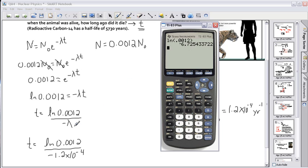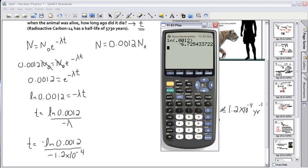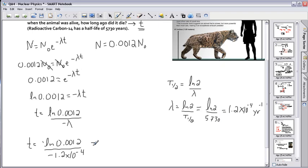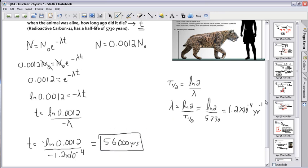ln of 0.0012 gives me this answer. Notice it's a negative, it's nice because this negative and the negative would cancel each other out. I take that answer, I divide it by negative 1.2 times 10 to the minus 4, and I get an answer of, with two significant figures, that'll be 56,000 years. So that tells us then that this saber-toothed cat must have died roughly 56,000 years ago.